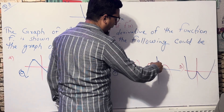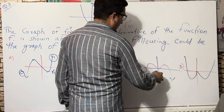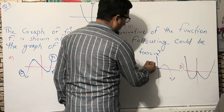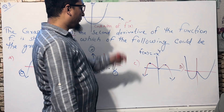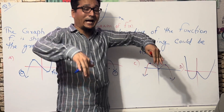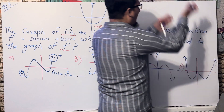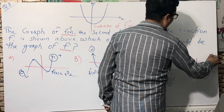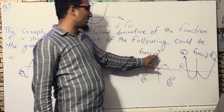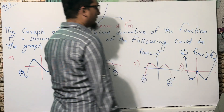Option C looks like an M shape, with both ends going down, and has 3 turning points. Three turning points means this is a degree-4 polynomial, and since both ends go down, it is minus x⁴. Option D has both ends going up with 3 turning points as well, so this is the equation of positive x⁴.